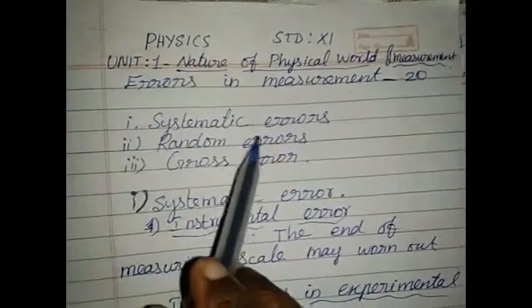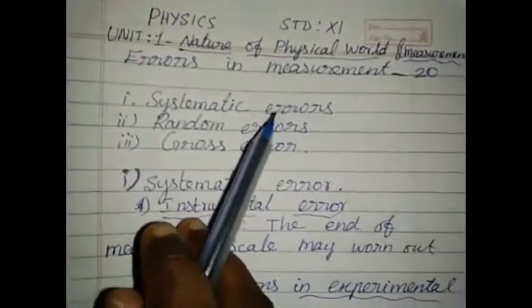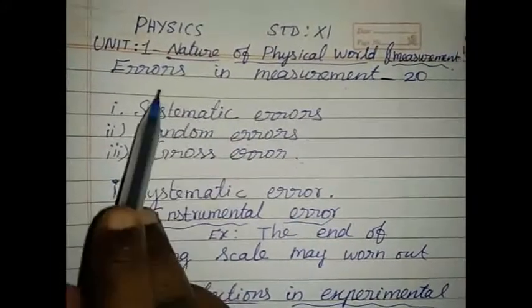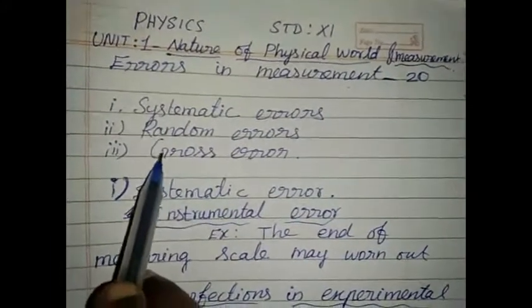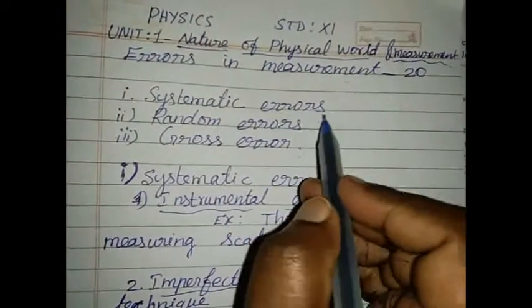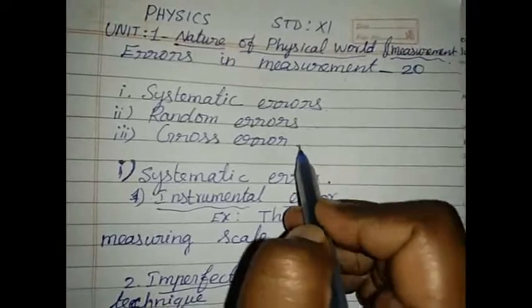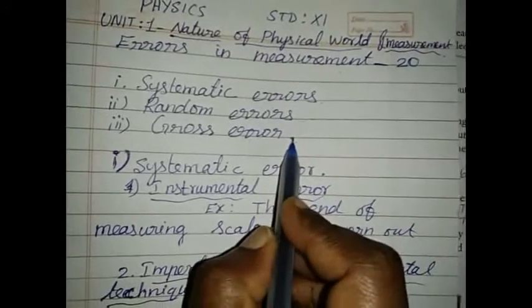First, what is meant by error? The uncertainty in a measurement is called error. This error has three different types. They are Systematic Errors, Random Errors and Gross Errors. Let's see one by one.